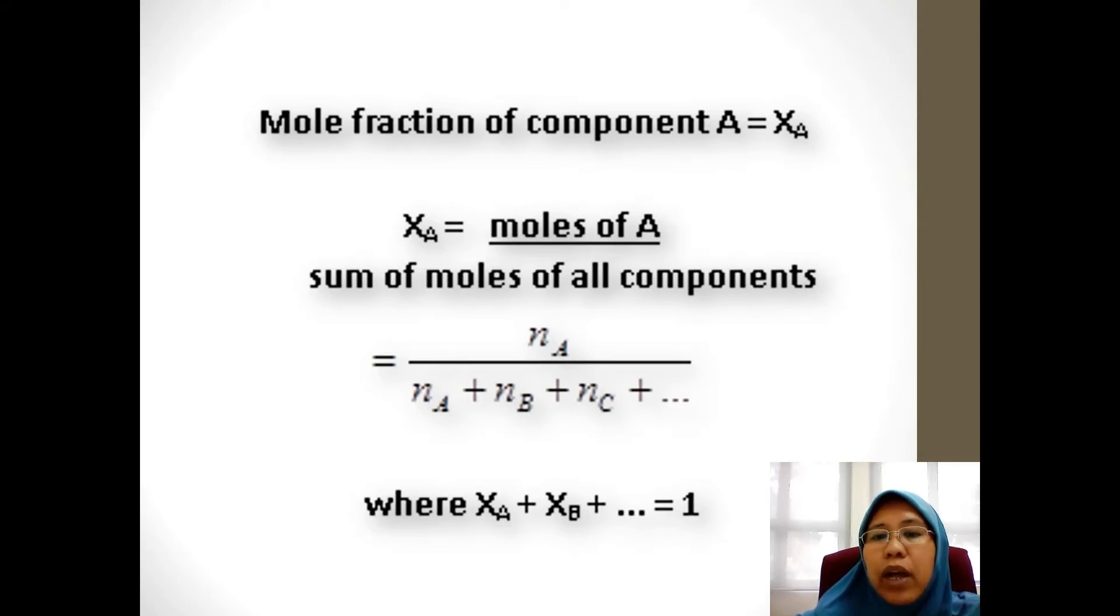So depending on how much component do you have in the solution, it will become the total for the formula. So NA divided by NA plus NB plus NC plus ND and so on.